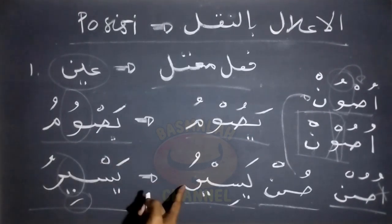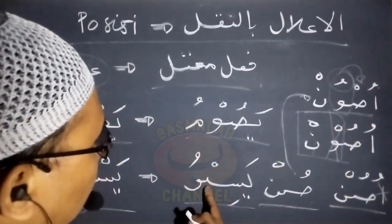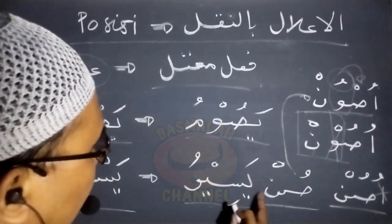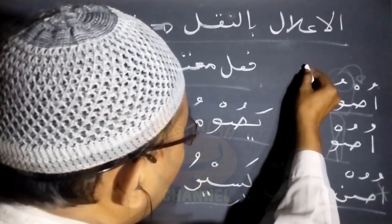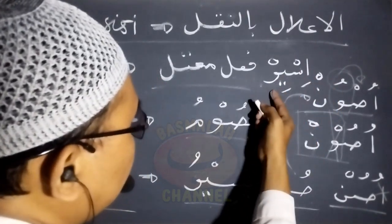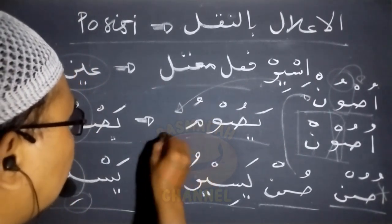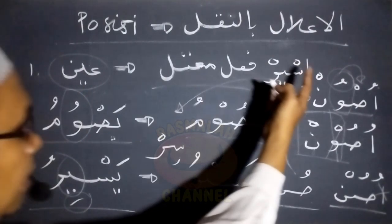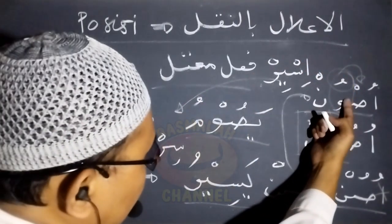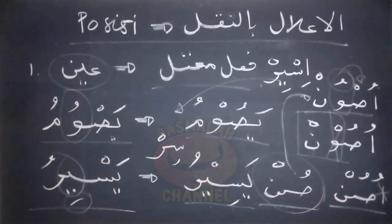Begitu juga bentuk fi'il amar dari lafad yasiru, yang pada asalnya adalah yasiru. Bentuk fi'il amarnya sama dengan lafad us'un, namun disini huruf ilatnya berupa huruf ya, sehingga bentuk fi'il amar daripada lafad yasiru itu adalah is'ir, yang nanti pada akhirnya akan berubah menjadi sir. Prosesnya bagaimana is'ir bisa menjadi sir sama dengan proses pada lafad us'un yang pada akhirnya berubah menjadi sun.